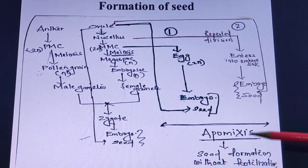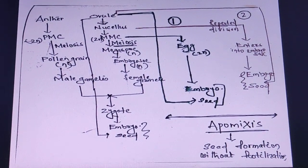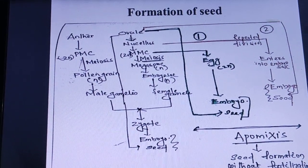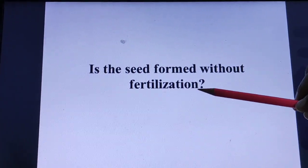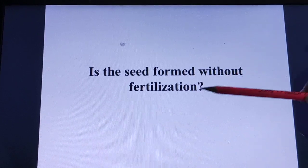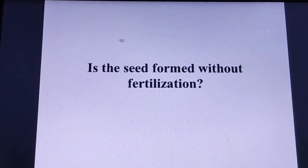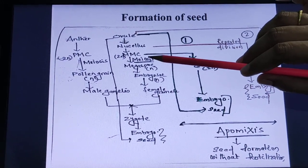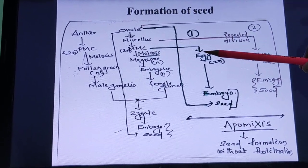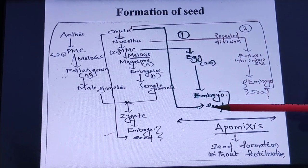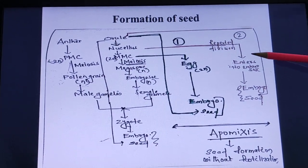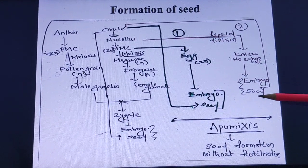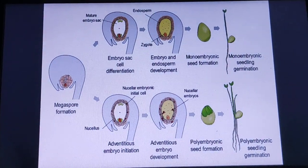This process of formation of seed without fertilization is known as apomixis. So the seed can be formed without fertilization through apomixis. There are two methods: one where a diploid egg is produced without meiotic division from the megaspore mother cell, which develops into an embryo leading to seed formation; and another where nucellar cells undergo repeated division, enter the embryo sac, behave as an embryo, and the ovule changes to a seed.